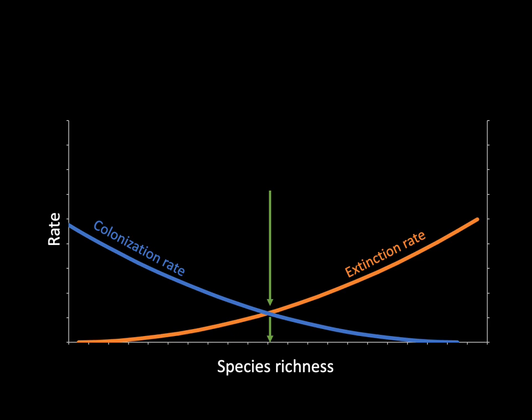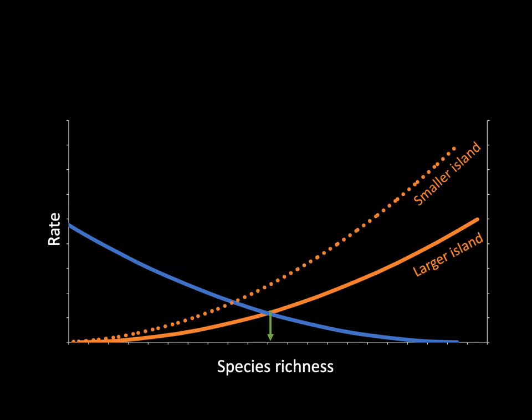The balance of colonizations and extinctions on any one island will determine the species richness of that island. This is why we speak of the equilibrium model — it predicts the number of species that will exist on the island when colonization and extinction rates are balanced, in other words when those rates are in equilibrium. We see this on the graph as the point where the two curves intersect, where colonization and extinction balance each other out. It gets interesting when we adjust these curves for islands of different sizes or different levels of isolation.